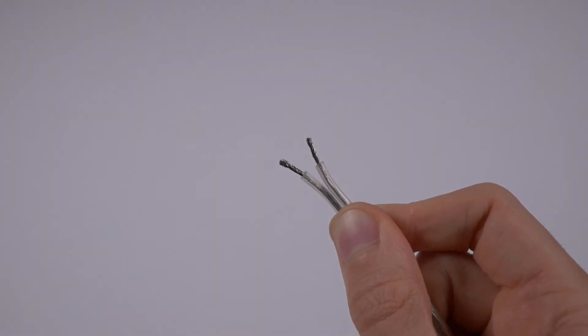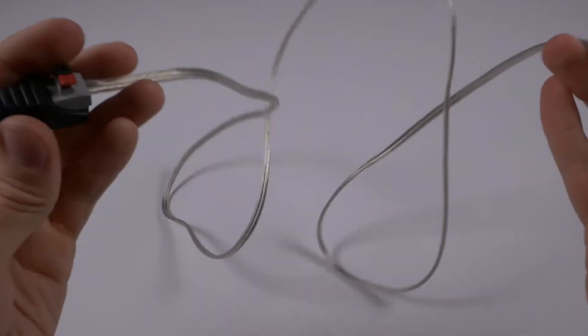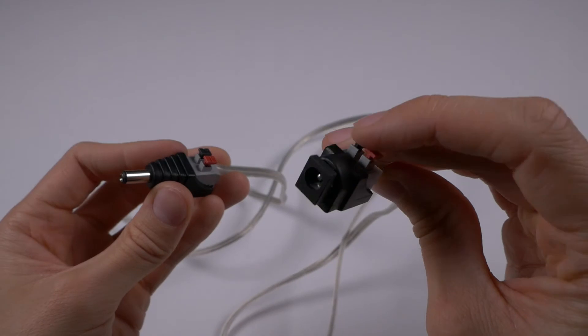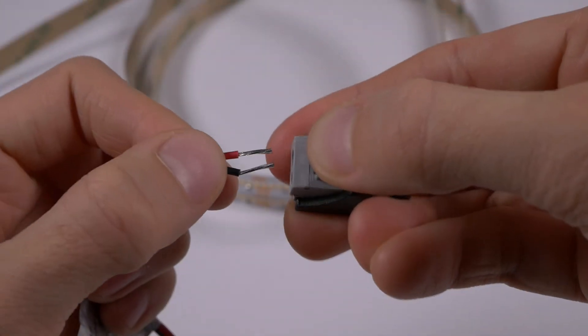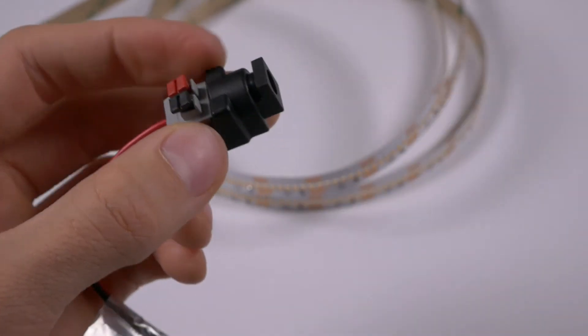You can use these handy adapters in a couple of different places. For example, you can make a low voltage extension wire by putting a female connector at one end and a male on the other. You can also put them on the bare wire ends of LED strips, if they don't already come with a molded barrel connector attached.